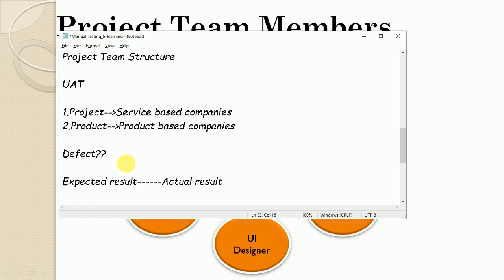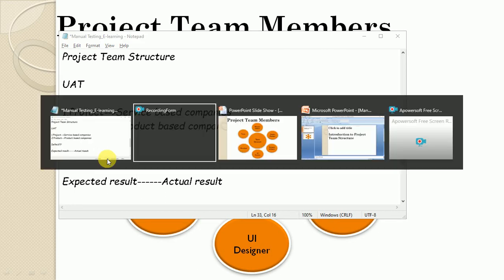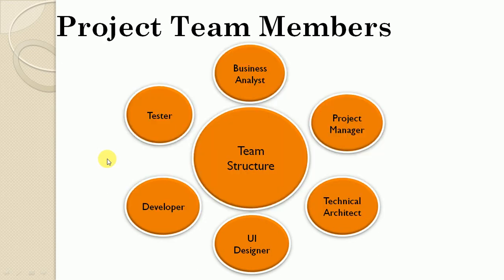The Tester is responsible for assessing quality by testing the software application, identifying defects, and working with the development team to get those defects fixed. We will see testing and tester responsibilities in more detail in future tutorials. Common responsibilities across the entire project team include team communication, status reporting, and reviews as per requirements. That's all for this video — please subscribe and like. Thanks for watching.